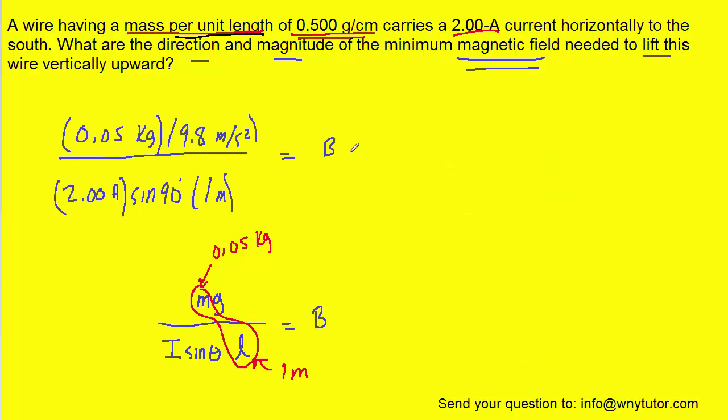And then g is the constant 9.8. Here are all the values plugged in. When you compute that, you get a magnetic field magnitude of 0.245 tesla. This would be the correct magnitude. We just have to determine the direction.